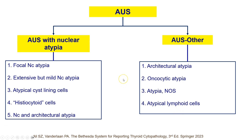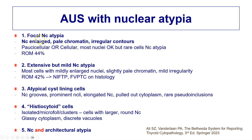Let's start by looking at AUS with nuclear atypia. Firstly, there is focal nuclear atypia, where cells exhibit enlarged nuclei with pale chromatin and irregular nuclear contours — raising the possibility of papillary thyroid carcinoma — but there are insufficient cells. The specimen may be paucicellular or cellular but with only very rare cells showing nuclear atypia, insufficient to call it suspicious for PTC.